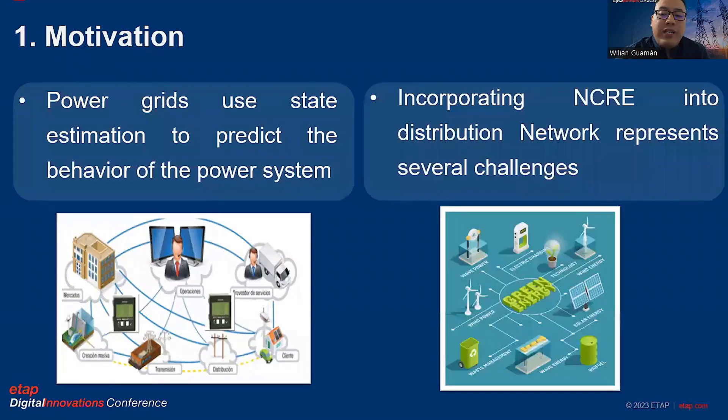Also, incorporating non-conventional renewable energy sources into the distribution network poses a severe challenge. For example, the bidirectional power flows cause protections of normal operations. Furthermore, the use of power converters may affect the quality and reliability of the system, as they can generate harmonic signals.